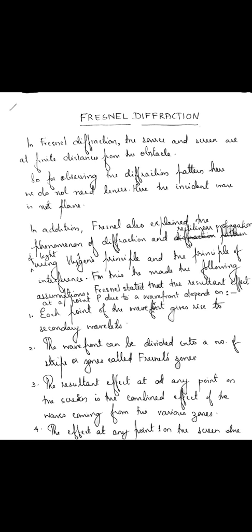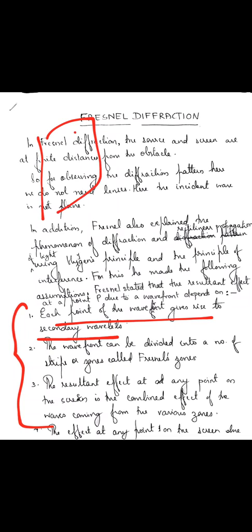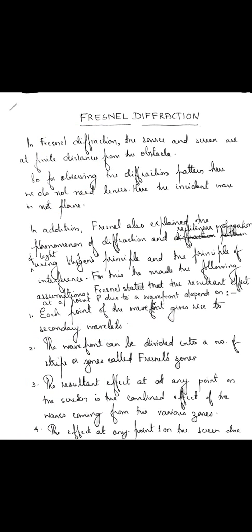There is a plane wavefront, and we have to find the resultant effect of this wavefront at a point P. To find that, Fresnel made some assumptions. The first assumption is: each point on the wavefront gives rise to secondary wavelets — that is part of Huygens' principle. The second assumption is: every wavefront is divided into a number of strips or zones called Fresnel zones.